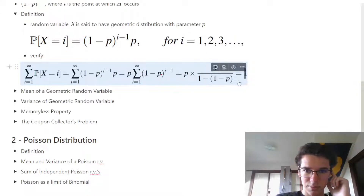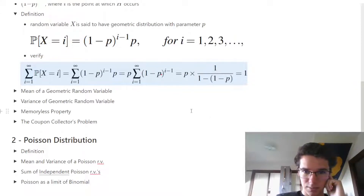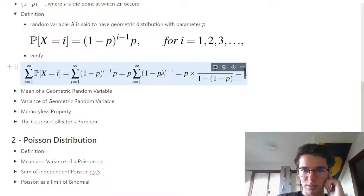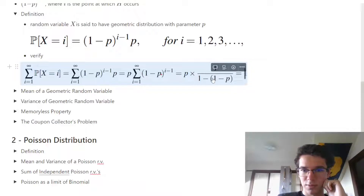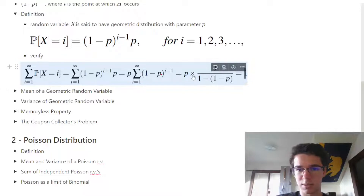This just proves that the probabilities add up to one. If we sum from one to infinity of these probabilities, p comes out, and as this goes to infinity, we can use the geometric series formula to put this into closed form. Algebraically, we can see p over p is equal to one.